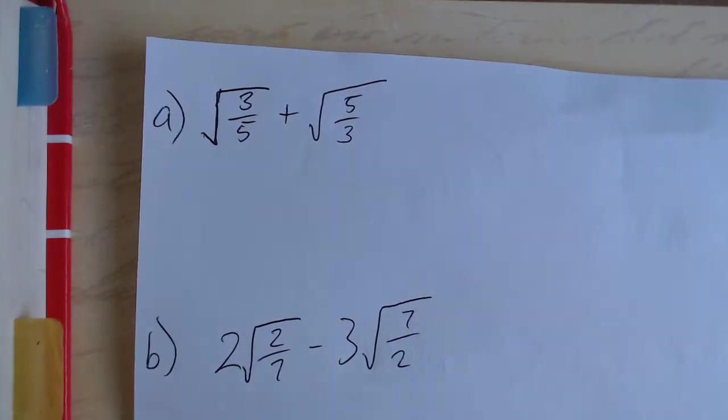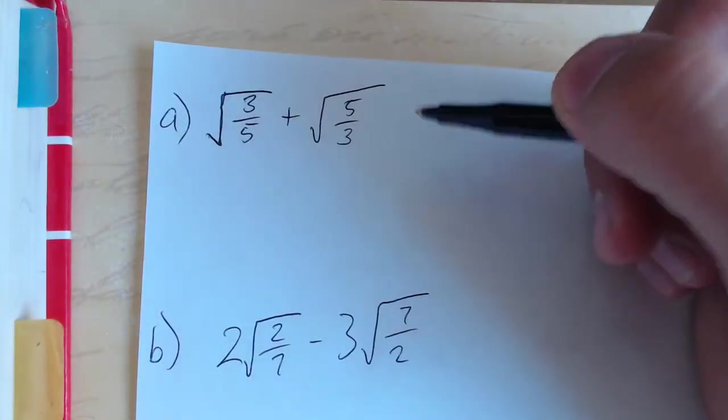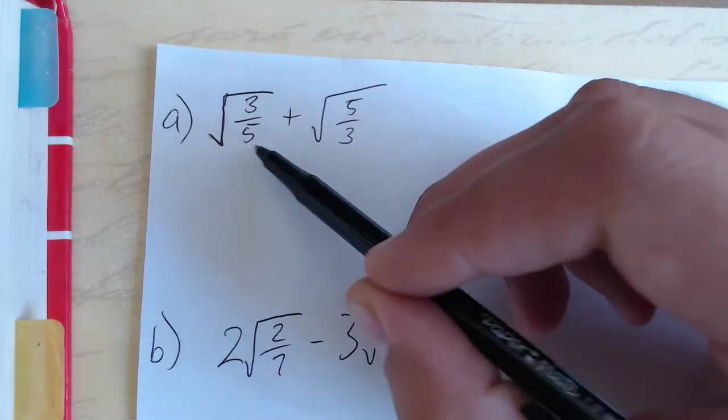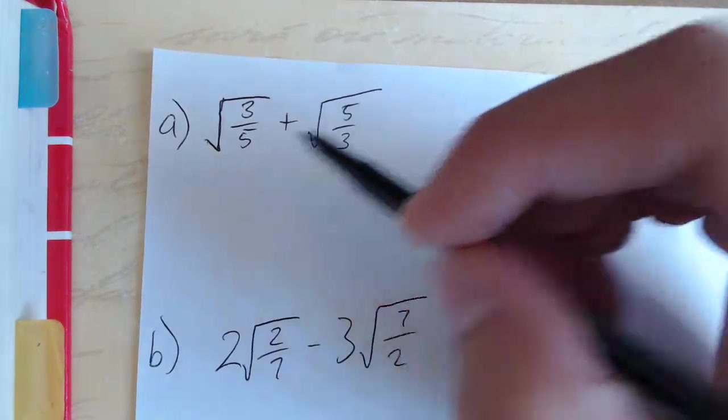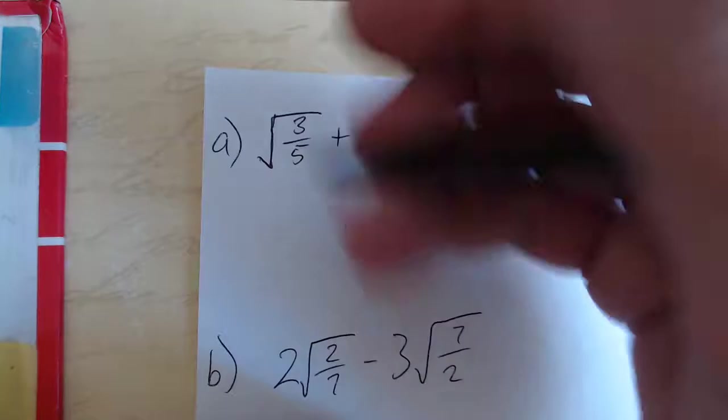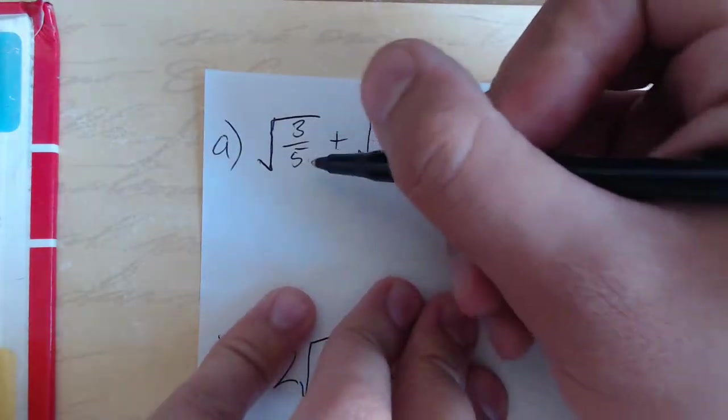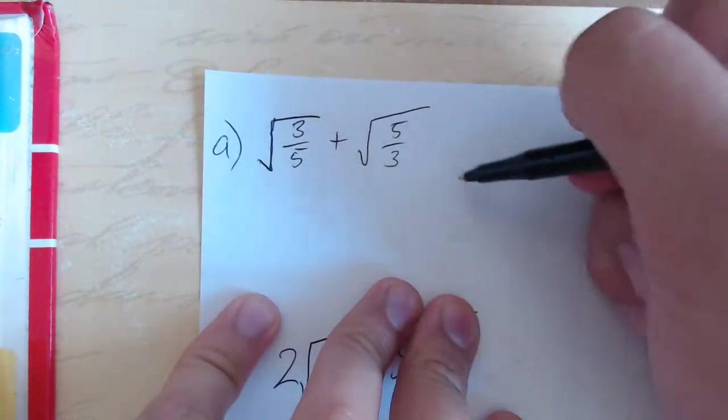So we have to add two fractional radical numbers, and we can't do that because they're not like terms. But what we can do is rationalize the denominator, that's something we should be pretty used to doing by now. So we'll take each number and multiply it by its radical denominator to rationalize it.